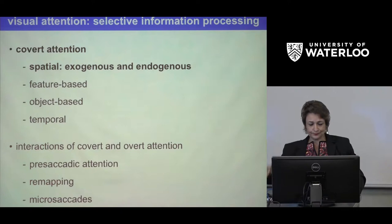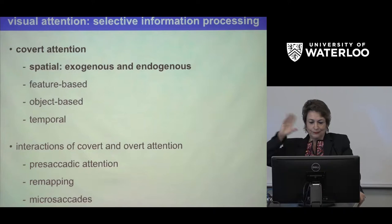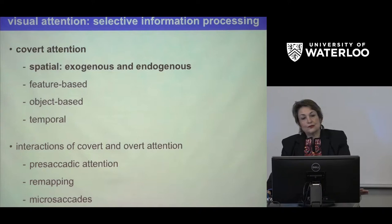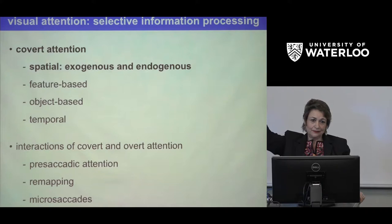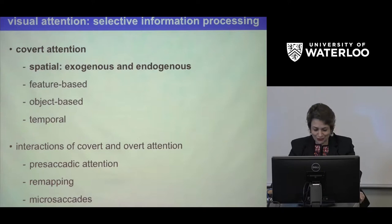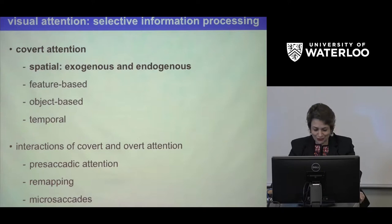A lot of research is also happening on interactions between covert attention and overt attention — that is, eye movements. What happens at the target location when we're preparing an eye movement? There's plenty of evidence showing that we selectively process information at a target location before we move our eyes, and the way information is affected is not exactly the same as when we don't plan an eye movement.